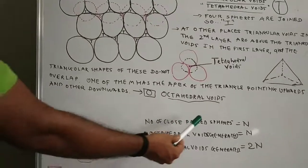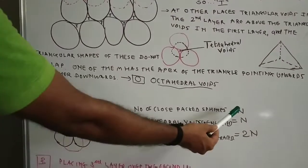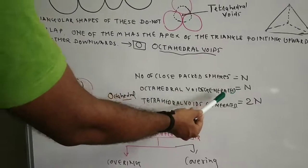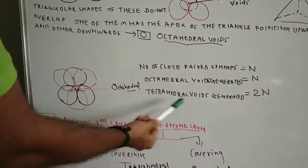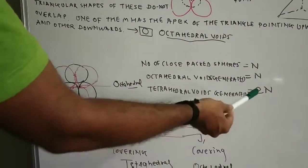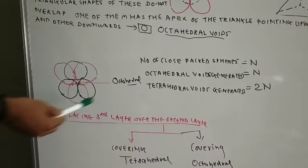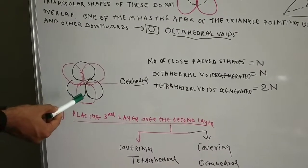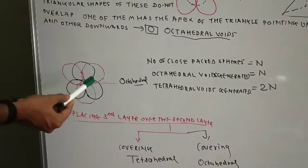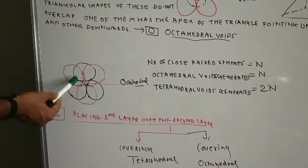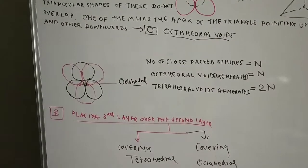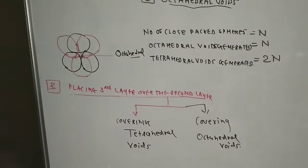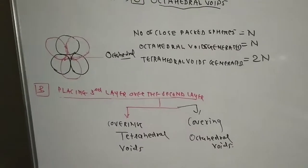Now let's calculate. If the number of close packed spheres is N, then the octahedral voids will also be N. But the tetrahedral voids will be double, that is 2N. The octahedral shape, as you can see, is in connection with six spheres — 1, 2, 3, 4, 5, 6 — and the void is generated in between them. This is what placing the second layer over the first layer gives us.